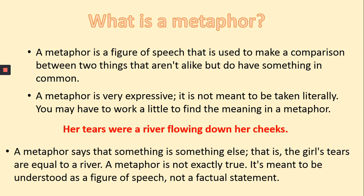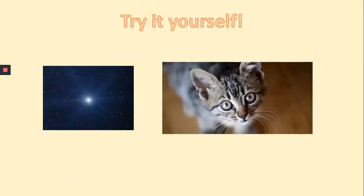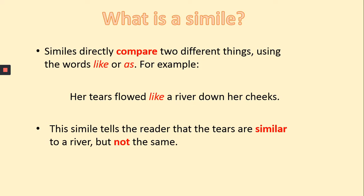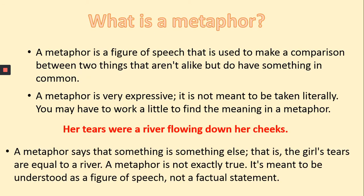Let's read through this example: 'Her tears were a river flowing down her cheeks.' For the simile, we said her tears flowed like a river, but look at the difference with the metaphor. A metaphor says that something is something else — in this case, the girl's tears are equal to the river. With similes it's just similar, however with metaphors it's equal. A metaphor is not exactly true; it's meant to be understood as a figure of speech and not a factual statement.